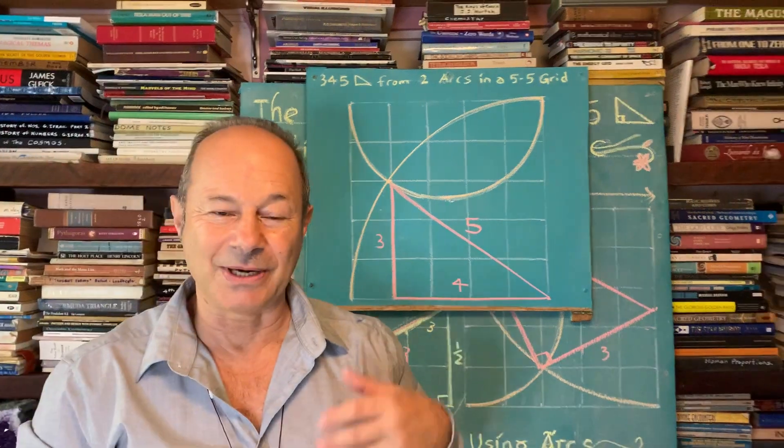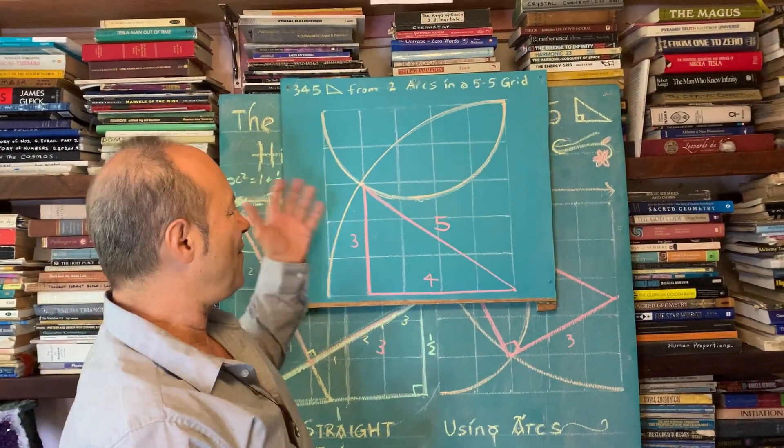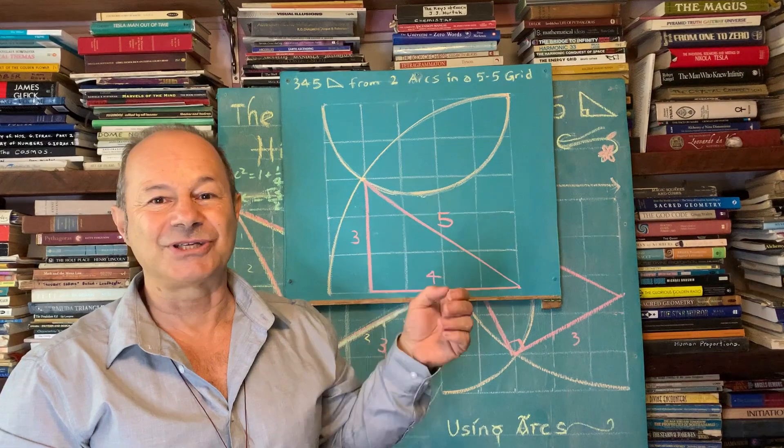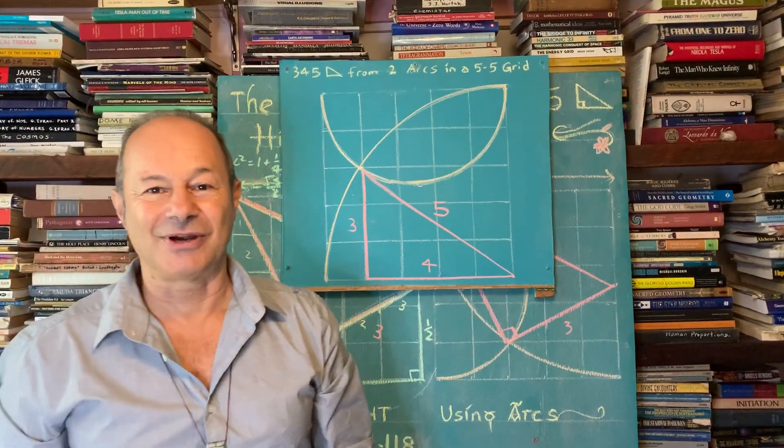So how simple and elegant and beautiful is this construction done with two simple arcs. I hope you enjoyed this knowledge, and there's a third one to come where we're going to find where is the golden ratio relationship inside the 3-4-5 triangle.